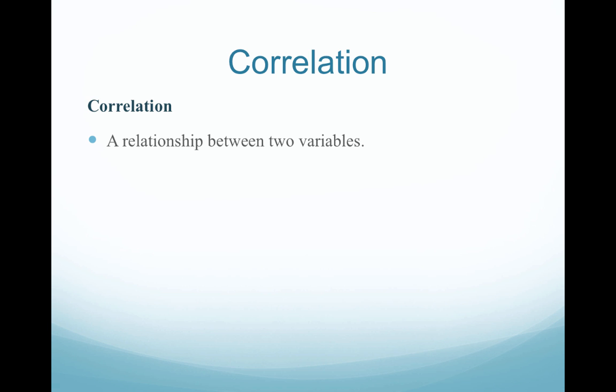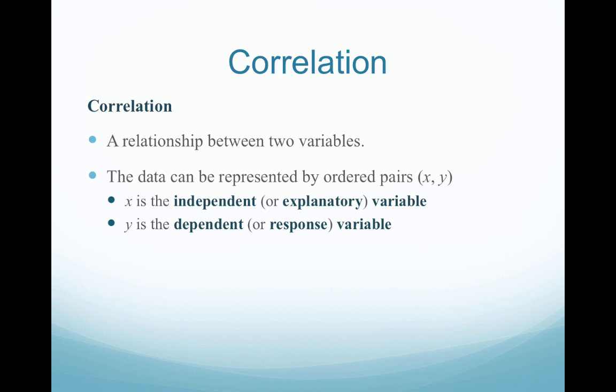So what is correlation? It's simply a relationship between two variables. The data can be represented by ordered pairs, so we have an X or independent variable — oftentimes referred to as an explanatory variable. And Y is going to be referred to as our dependent variable or the response variable — it's what gets predicted.